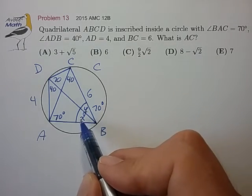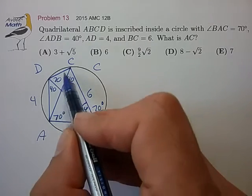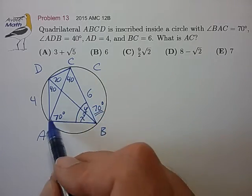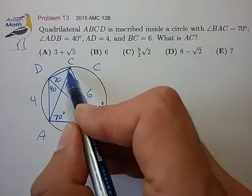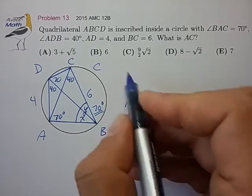you then determine that ACB is in fact an isosceles triangle. So that AC is equal to CB, and so AC is equal to 6, and that's choice B.